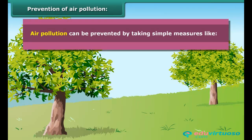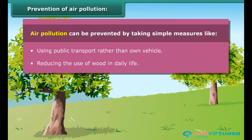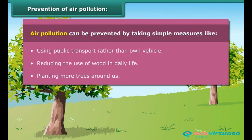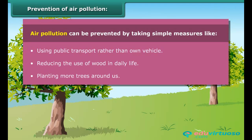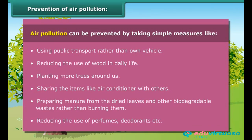Air pollution can be prevented by taking simple measures like using public transport rather than a personal vehicle, reducing the use of wood in daily life, planting more trees, sharing items like air conditioners with others, preparing manure from dried leaves and other biodegradable wastes rather than burning them, and reducing the use of perfumes, deodorants, etc.